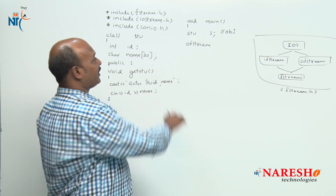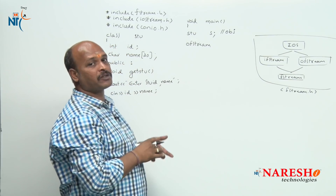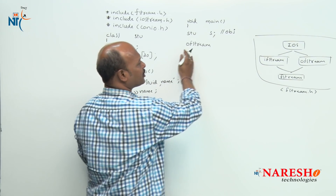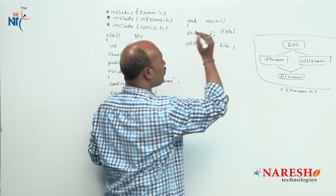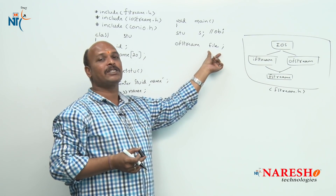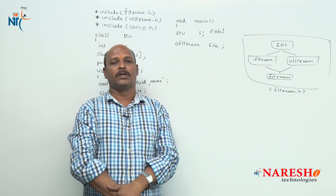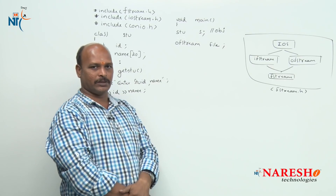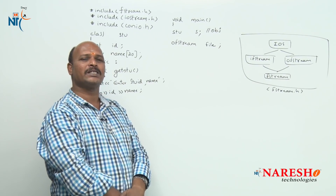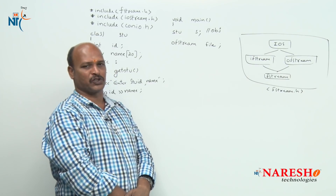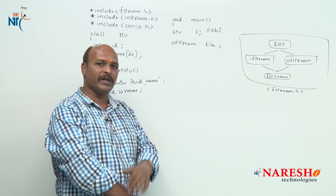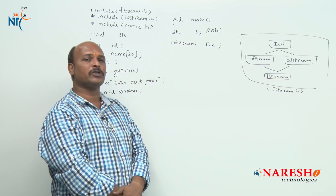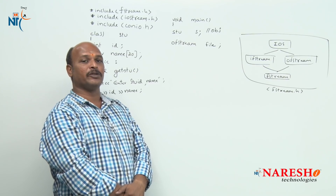ofstream is a predefined class. When there is a predefined class we should use an object — so I declare an object called 'file'. ofstream is the class and 'file' is the object. In C++ we can open files in two ways: one is by using a parameterized constructor, and the second is by using the open() member function.